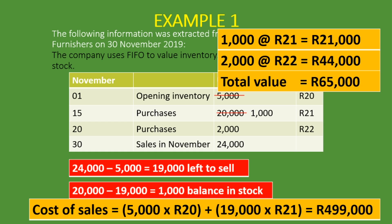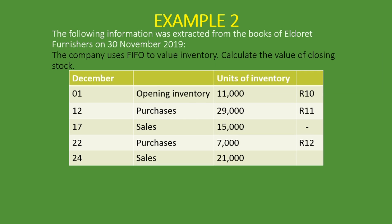I have a second example here. We have the following information for the same company, Eldoret Furnishers, on the 30th of November. The company uses FIFO to value inventory — calculate the value of closing stock. I want you to pause and try this question yourself. Engage yourself to see if you understand from the previous example. If you don't get it correctly, go back and rewatch the previous part.